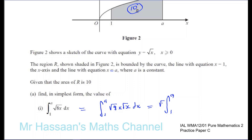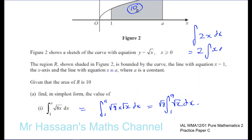So this can be written as the square root of 8 times the integral of the square root of x dx. Just like the integral of 2x dx can be written as 2 times the integral of x dx and give the same answer. So the square root of 8 times x, all under the square root, can be split into the square root of 8 times the root of x.